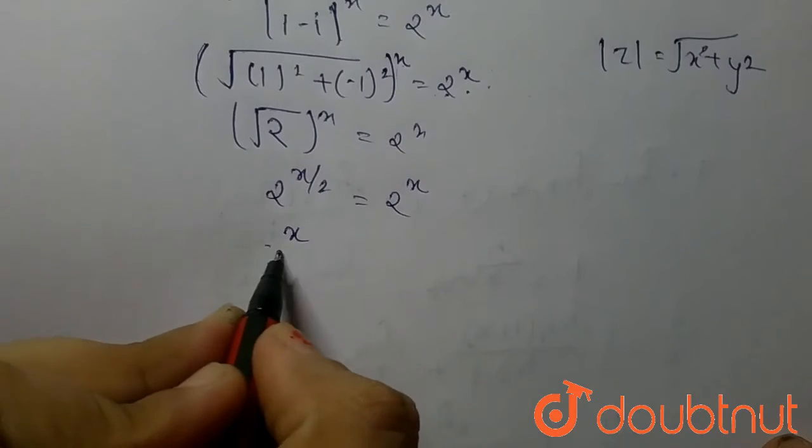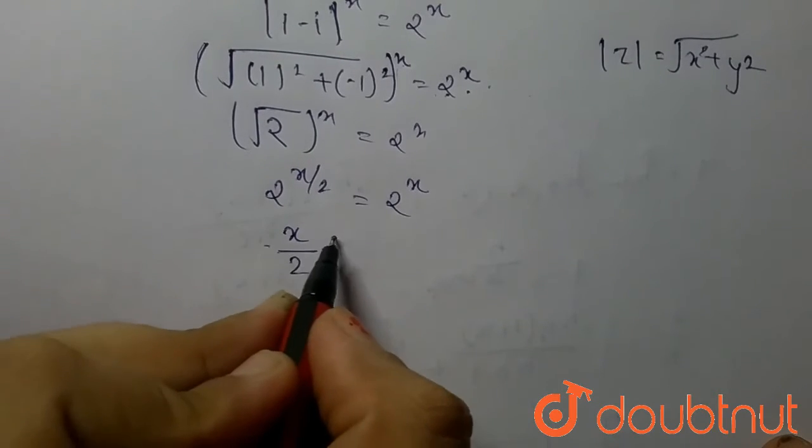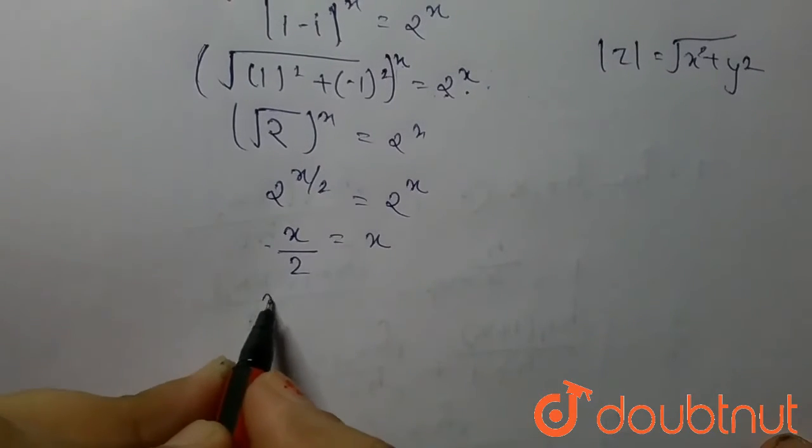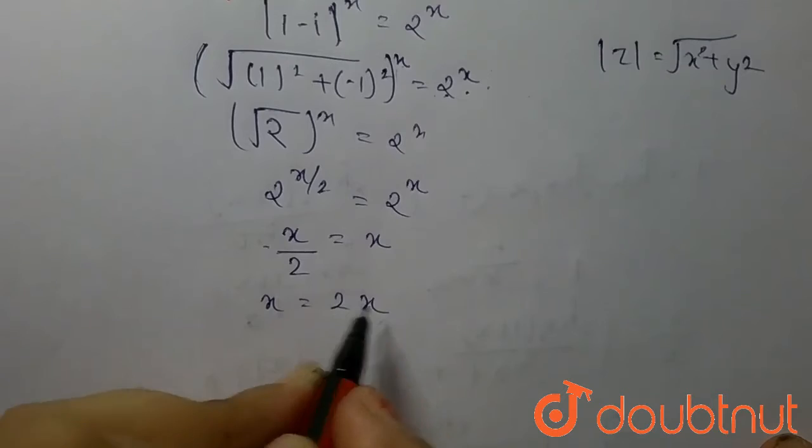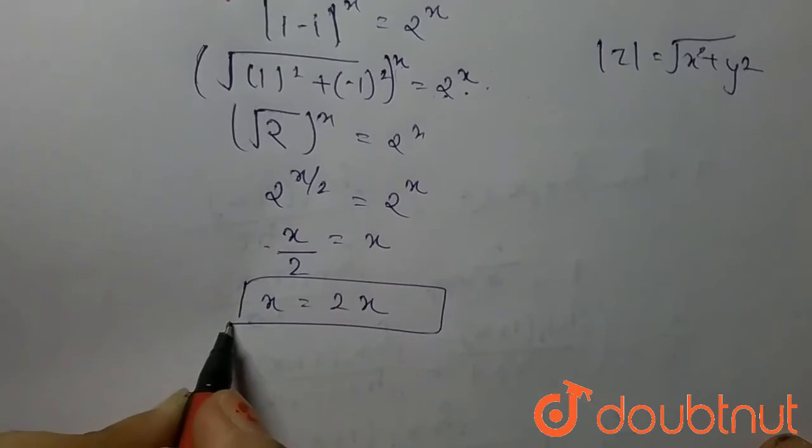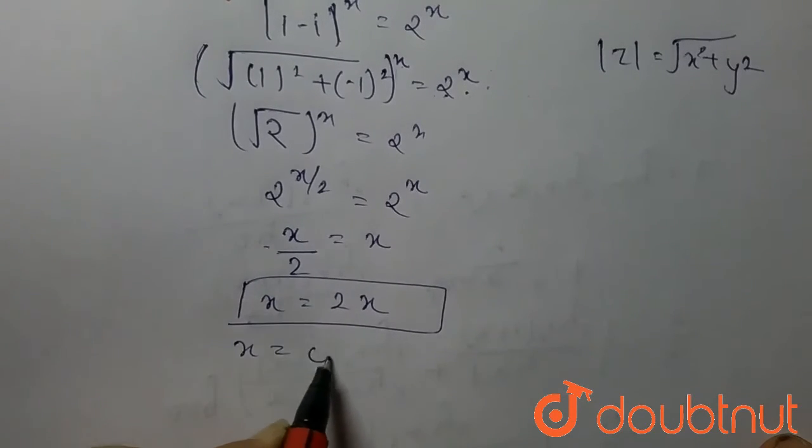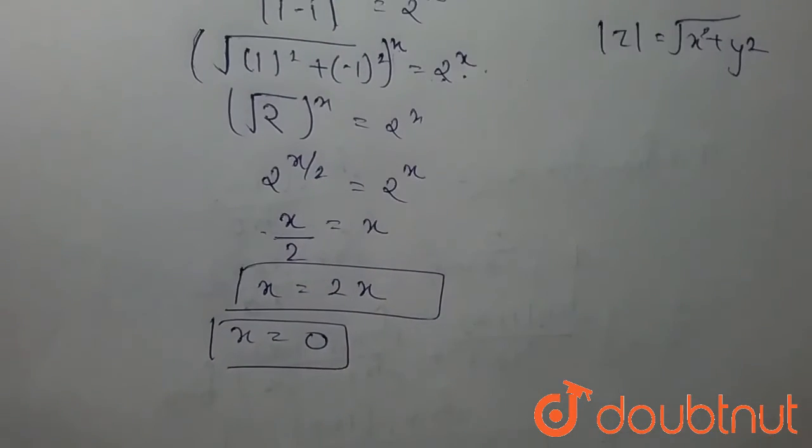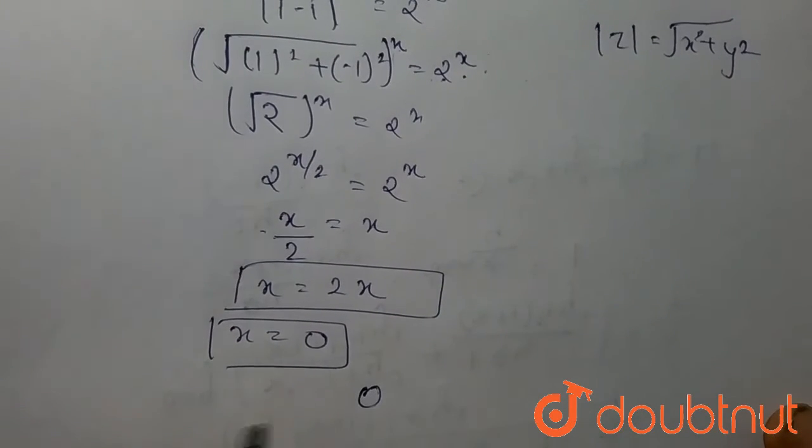So we get x/2 equals x. That means the value of x equals 2x, and it is only possible when the value of x equals 0. So the number of non-zero integral solution of this equation is 0. This is our final answer. Thank you.